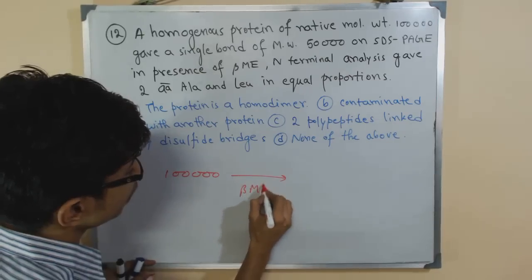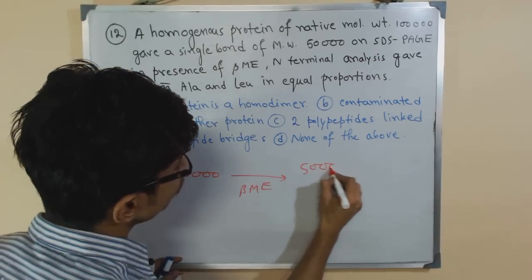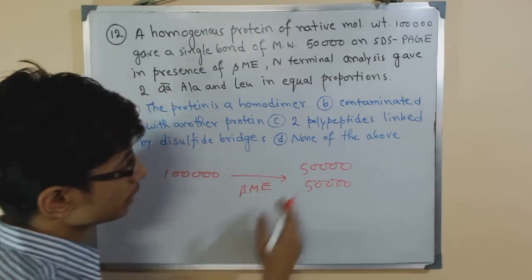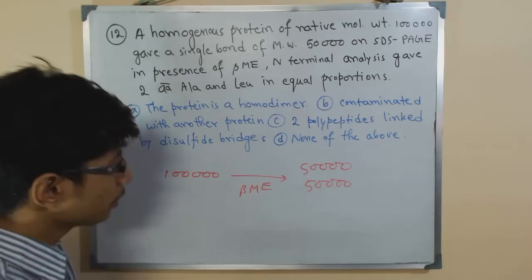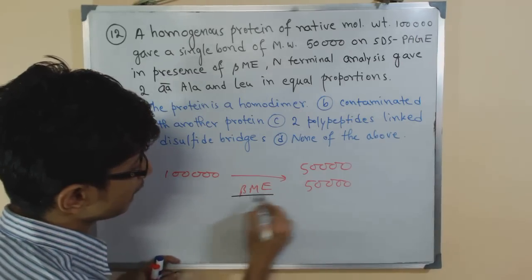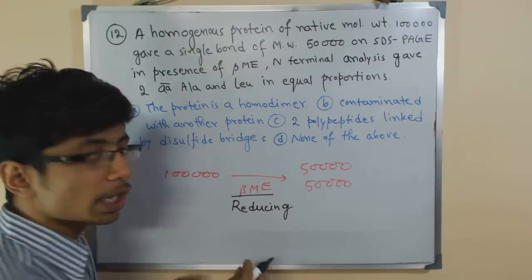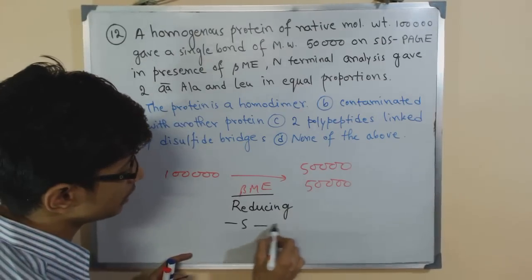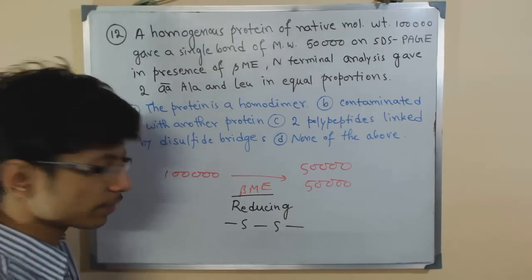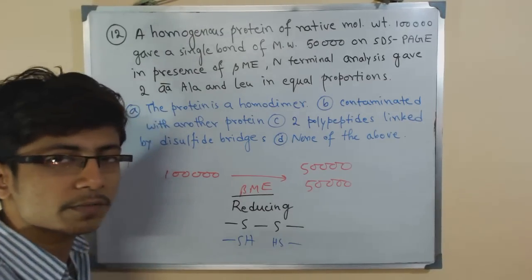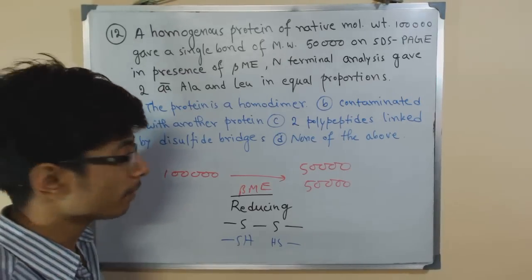So definitely if we have a protein with 1 lakh molecular weight, we use beta-mercaptoethanol, we receive two 50,000 Dalton molecular weight containing proteins. So what does that mean? You know beta-mercaptoethanol is an agent, it is a reducing agent and beta-mercaptoethanol can reduce the disulfide bridge. It reduces the disulfide bridge to form normal sulfur and it breaks them apart.